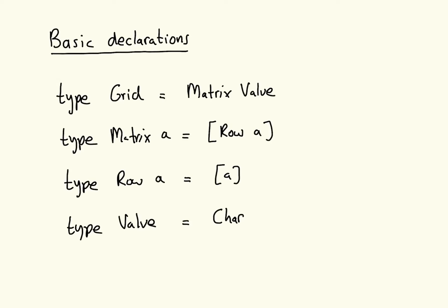A couple of points to re-emphasize: the matrix type and the row type are parameterized — we have a matrix of things of type A and a row of things of type A, giving us flexibility we'll use later. I could have got rid of all of this and just written that a Sudoku grid is a list of lists of characters. But the matrix type, row type, and value type are useful intermediate types for defining some helper functions later on.